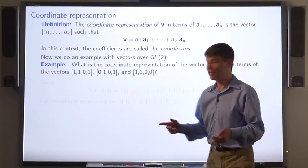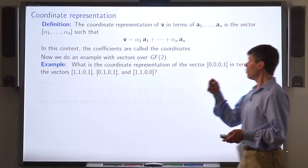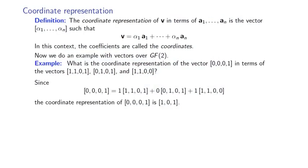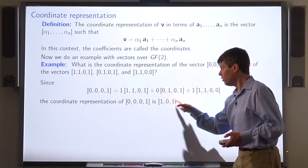Here's one more example. What's the coordinate representation of this vector in terms of these three vectors? Here we've expressed this vector as a linear combination of these vectors. The coefficients are 1, 0, and 1, so the coordinate representation is the vector 1, 0, 1.